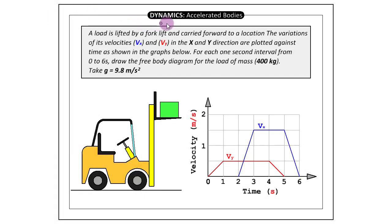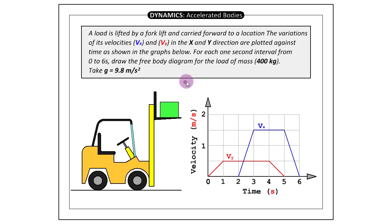Here we'll be doing one problem from dynamics on accelerated bodies. The problem says a load is lifted by a forklift and carried forward to a location. The variation of its velocities vx and vy in the x and y direction are plotted against time as shown in the graph below. For each one second interval from 0 to 6 seconds, draw the free body diagram of the load of mass 400 kg.